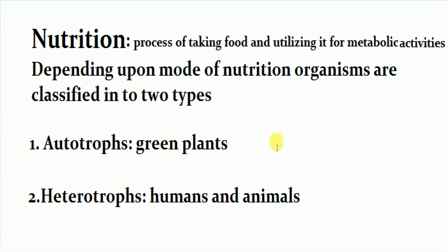Different organisms take nutrition in different ways. Depending upon the mode of nutrition, organisms are classified into two types. The first type is autotrophs — organisms which can prepare their own food are called autotrophs. For example, green plants can prepare their own food by the process of photosynthesis. Autotrophs do not depend on other organisms for their food.